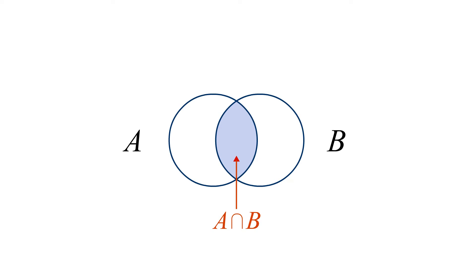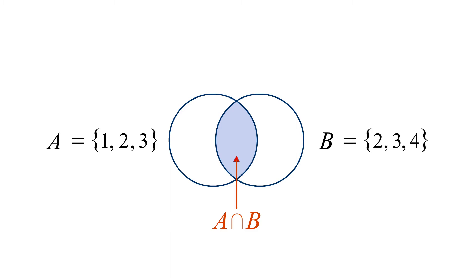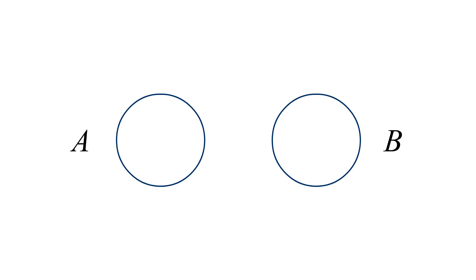We denote set intersection by a symbol which looks like an inverted U. This collection of common elements forms a new set. For example, if set A contains the elements 1, 2, and 3, and set B contains 2, 3, and 4, then the elements which A and B have in common are 2 and 3, and this intersection forms a new set containing the elements 2 and 3. Two disjoint sets have no elements in common, so their intersection forms the empty set.